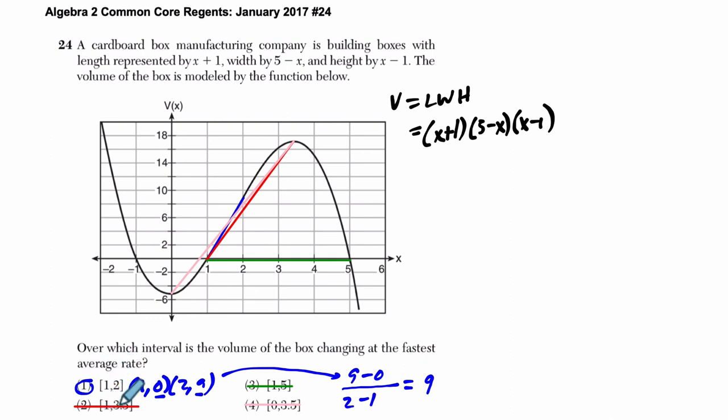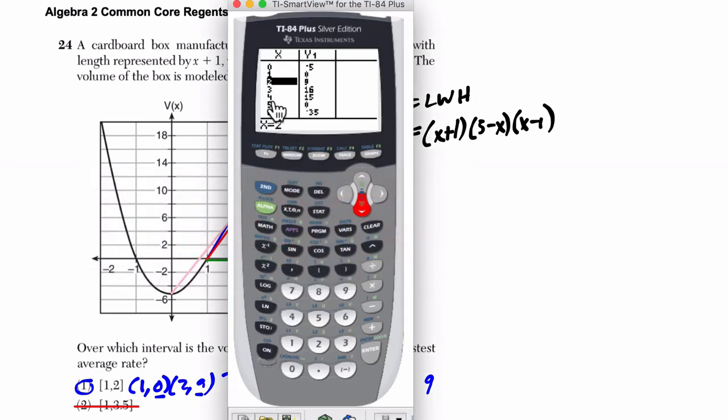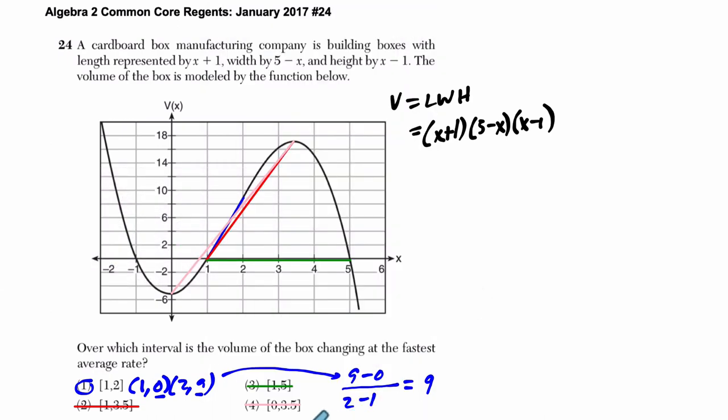Now if we go to, let's say, 1 and 3.5. Or let's go to 1 and 5 because our table is already set for that. So if we go to 1 and 5, I'm going from 1, 0 to 5, 0. So, for example, if I had to calculate these slopes, I could do this. So from 1, 0 to 5, 0.